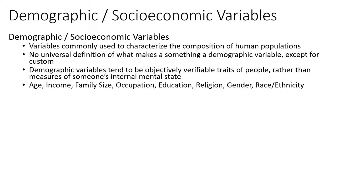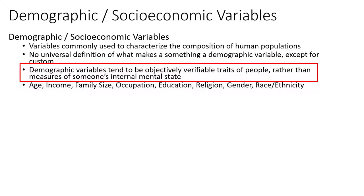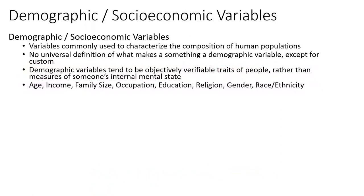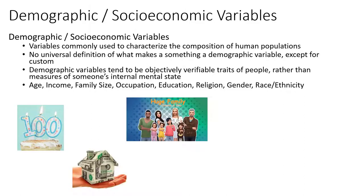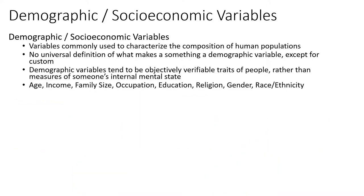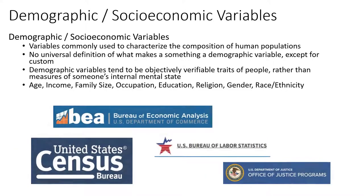With that said, there are a few general traits of a demographic variable. First, demographic variables tend to be objectively verifiable traits of individuals rather than internal mental states like satisfaction or loyalty that we may collect in other categories of marketing data. Common examples of demographic variables include age, income, family size, occupation, education, and so on. We're familiar with these types of variables because they are commonly collected by government agencies, not just business organizations.